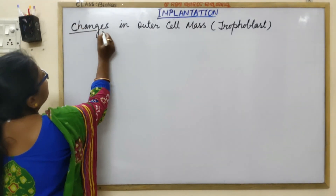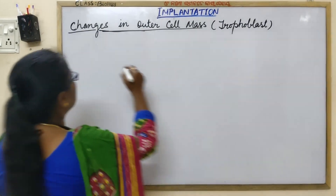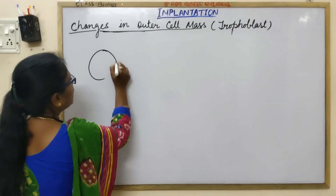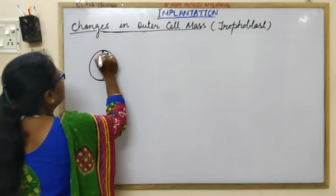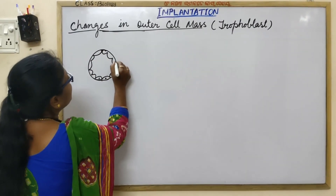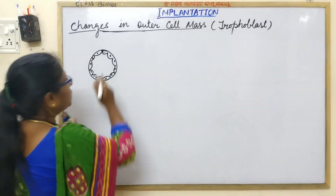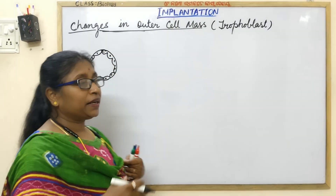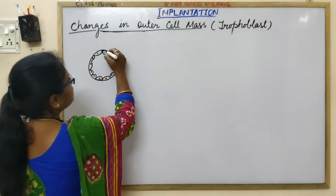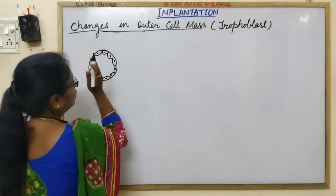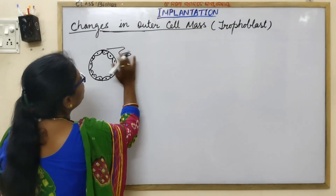Now, let us discuss what changes occur to the outer cell mass, that is the trophoblast. When the blastocyst comes in contact with the uterine wall, it is loosely attached to the wall. But gradually, it is buried into the functionalis endometrium because the trophoblast differentiates into the inner cytotrophoblast and an outer syncytiotrophoblast.